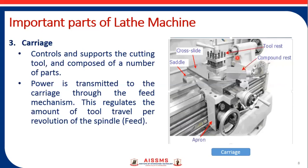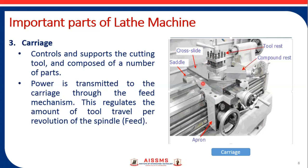The next important element is the carriage. It controls and supports the cutting tool, composed of a number of parts. Power is transmitted to the carriage through the feed mechanism, which regulates the amount of tool travel per revolution of the spindle. The carriage gets power through the feed mechanism by virtue of the lead screw, and it supports the cutting tool mounted in the tool post. The carriage assembly consists of parts such as tool rest, compound rest, cross slide, saddle, and apron.